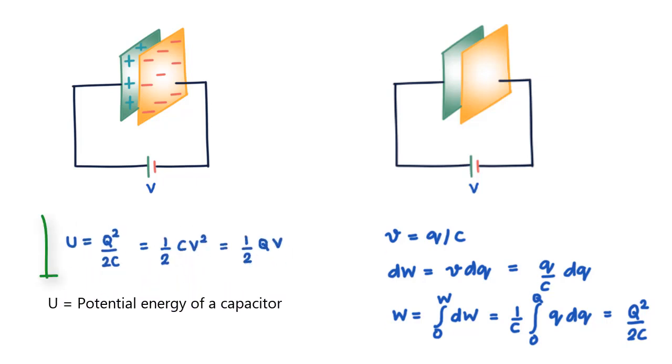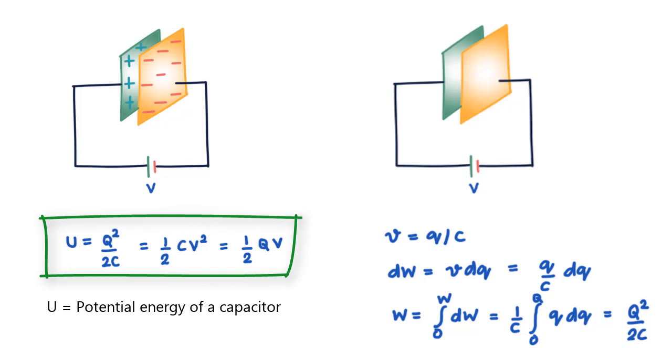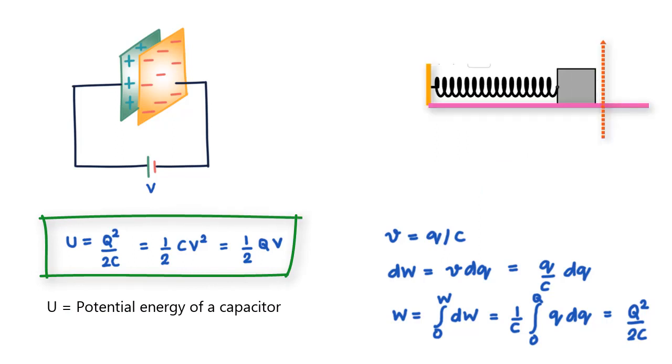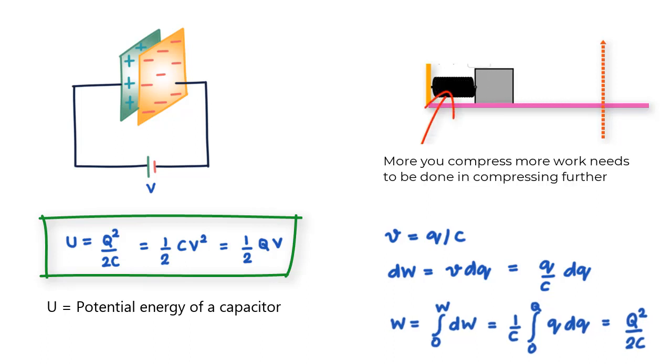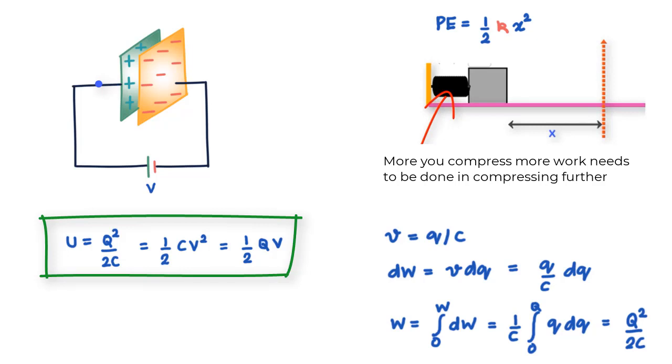I would encourage you to draw a parallel of charging the capacitor with a spring being compressed. The more you compress a spring, the more work needs to be done in compressing it further. This work done shows up as potential energy in the compressed spring, which is ½kx². The situation of moving charge from one plate to the other is quite the same. We face more and more resistance like this spring as more charge moves from one plate to the other.